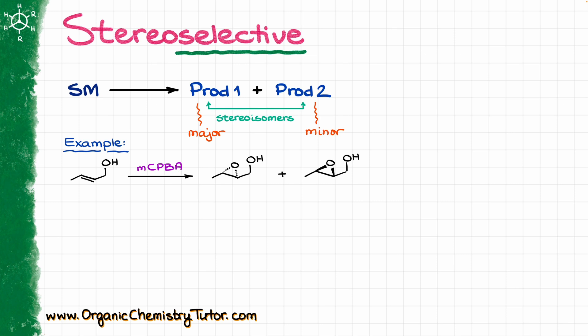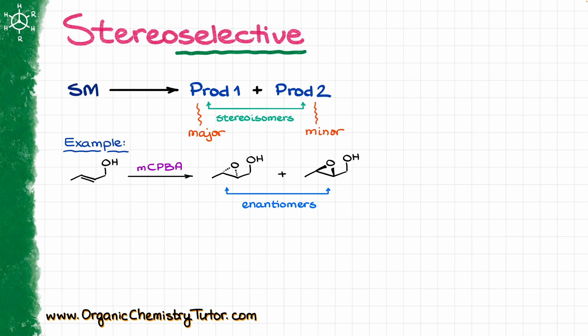Let's say we have a typical epoxidation reaction where we have a double bond, we are reacting it with meta-chloroperoxybenzoic acid, and we are getting an epoxide as our product. In this case, the relationship between our two products is enantiomers, and we are going to get roughly 50% of each of those enantiomers — in other words, a racemic mixture. Since we are not seeing any selectivity towards one of the two possible products, we say this reaction is not stereoselective.